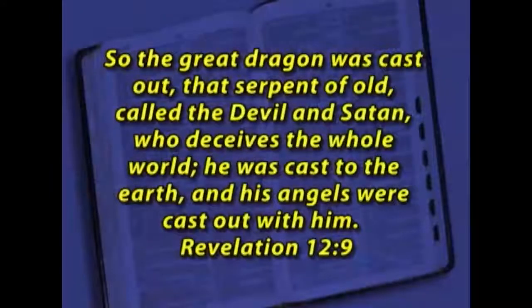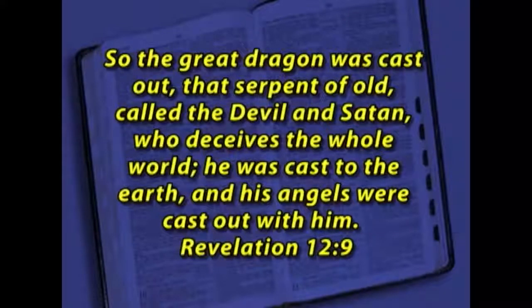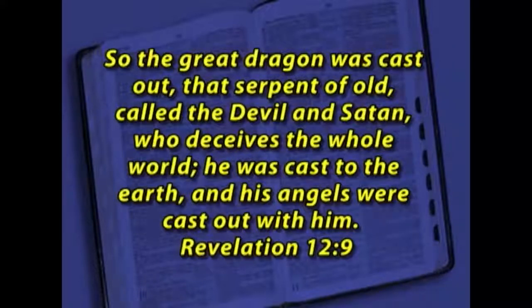The Bible says in Revelation 12, verse 9: 'So the great dragon was cast out, the serpent of old, called the devil and Satan, who deceives the whole world. He was cast to the earth, and his angels were cast out with him.' This great dragon is identified very clearly: he is the devil, he is Satan, the one who deceives the whole earth. John 8, verse 44, Jesus identified the devil as a liar and a murderer from the beginning. So the dragon in Revelation 12, verse 9 is clearly identified as Satan.